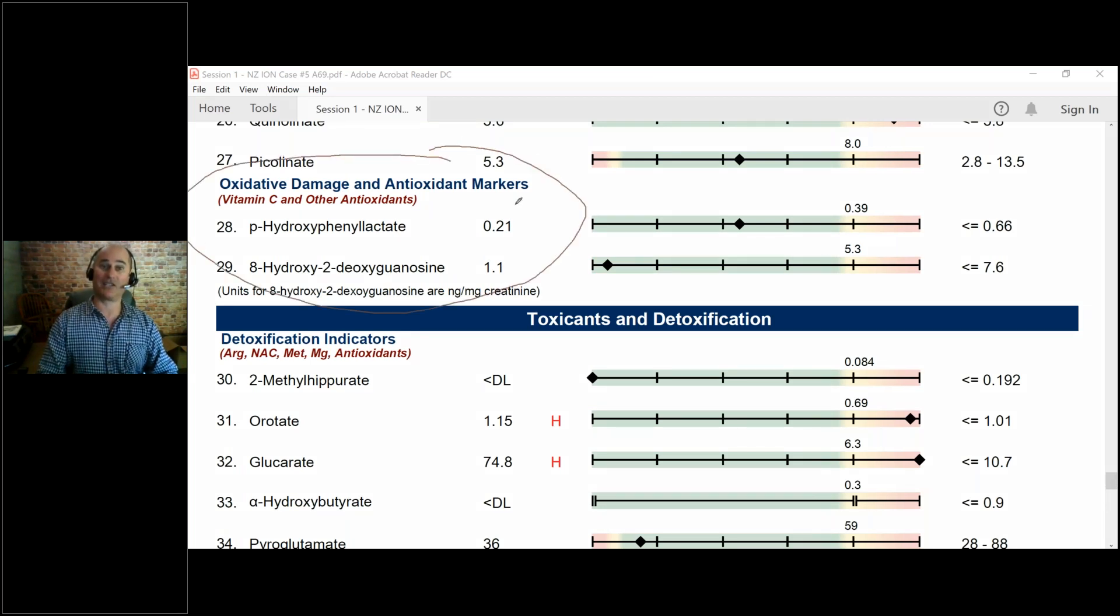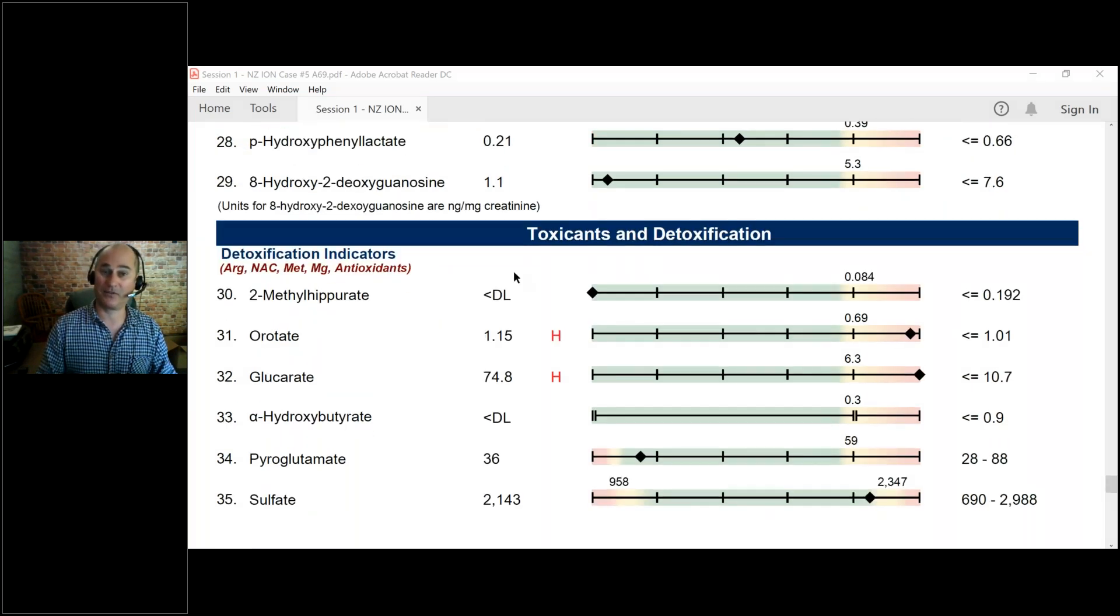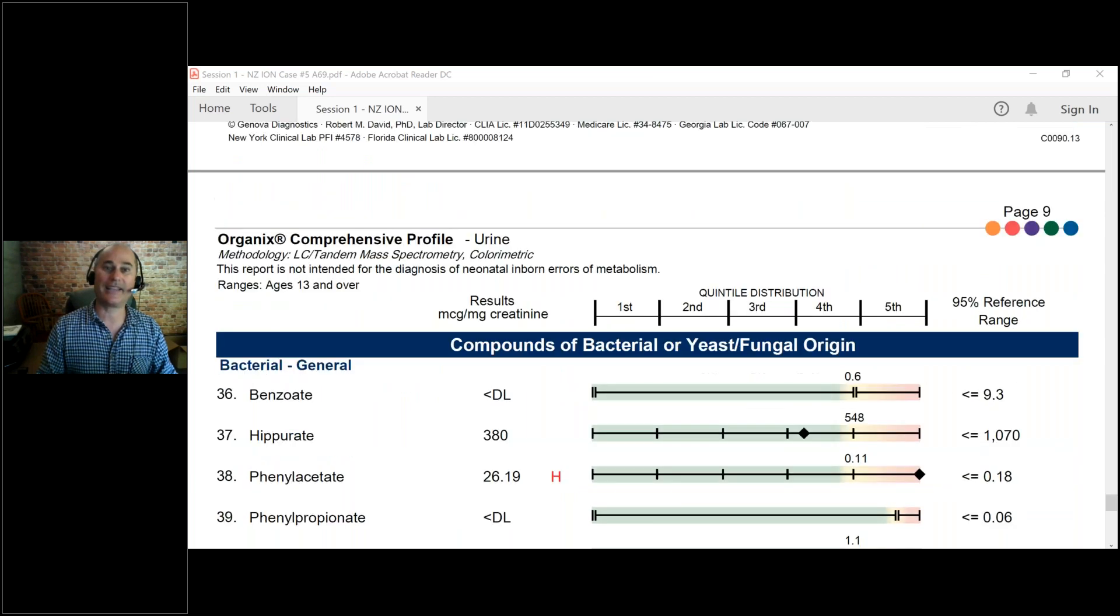This looks at whether you have enough antioxidants or not. Antioxidants protect you against heart disease, cancer, diabetes. Antioxidants are powerful anti-inflammatories. Obviously, they're super important from a nutritional perspective. So we're measuring whether you have enough antioxidants or not. We talked about liver detox already.